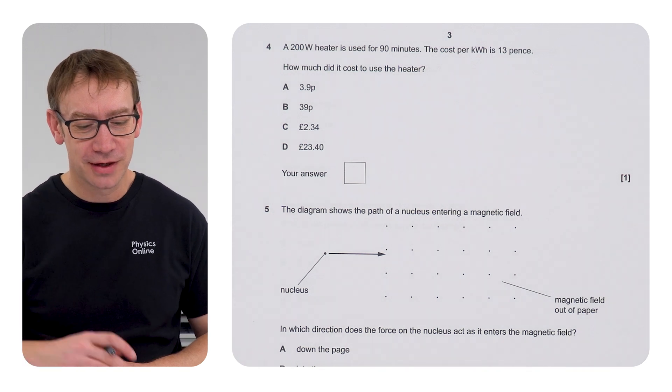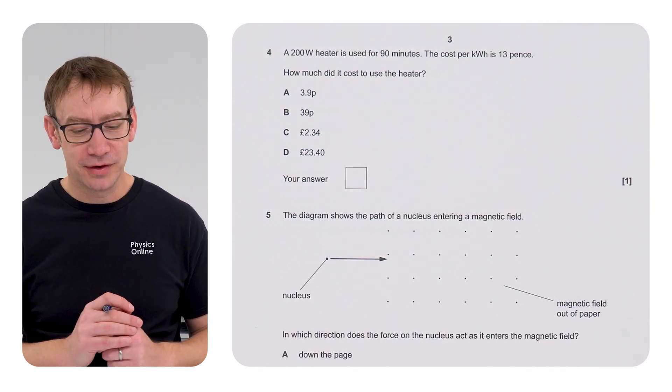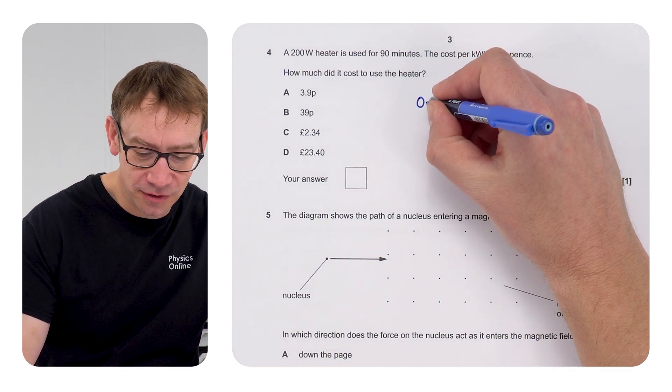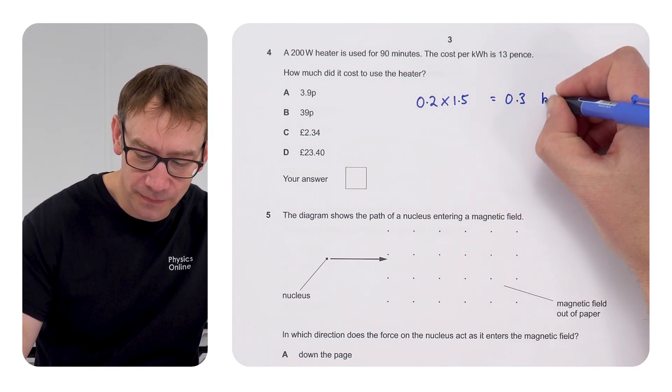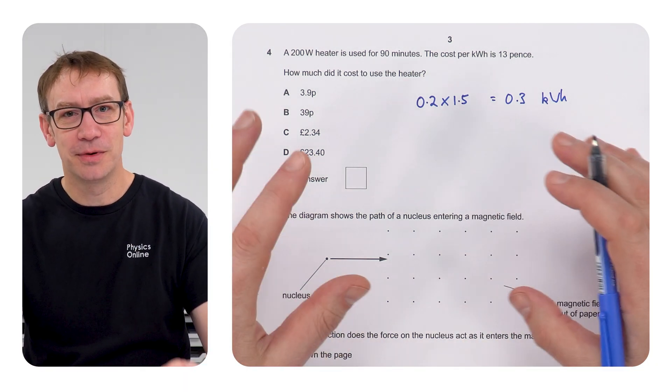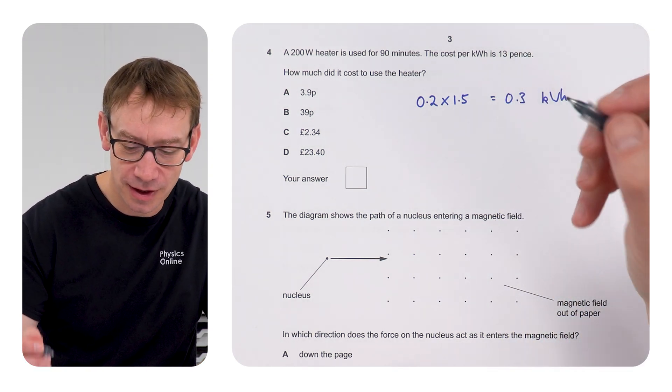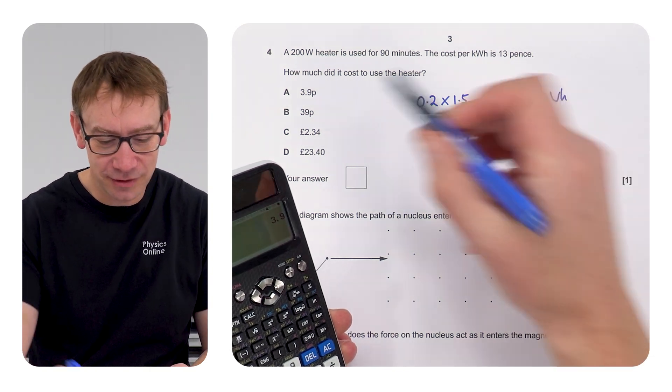The next one, a bit of a calculation. A 200 watt heater is used for 90 minutes. The cost per kilowatt hour is 13 pence. How much does it cost to use a heater? First of all, the amount of energy used is going to be equal to the power times time. That's going to be 0.2 kilowatts times 1.5 hours which is equal to 0.3 kilowatt hours. In your exam use a calculator for any of these simple calculations just to make sure. Then all you need to do is multiply the number of kilowatt hours by the price per kilowatt hour. That's going to be 0.3 times 13, which I did do on my calculator, and that's equal to 3.9 pence. Therefore the answer for 4 is A.